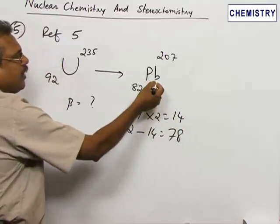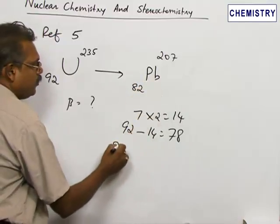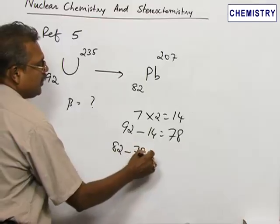But here, the atomic number is 82. An increase in atomic number takes place that is 82 minus 78, which will give 4.